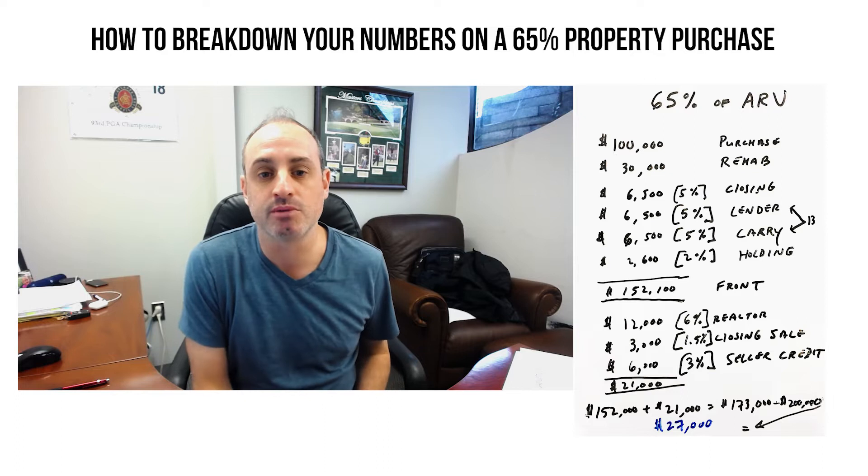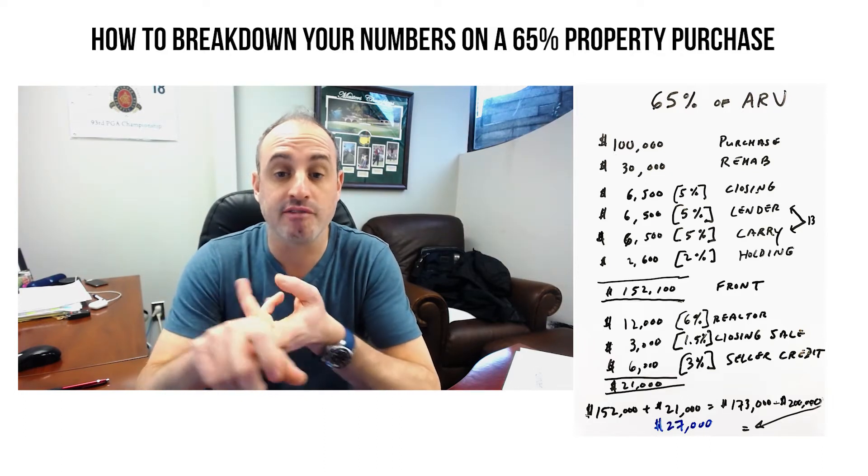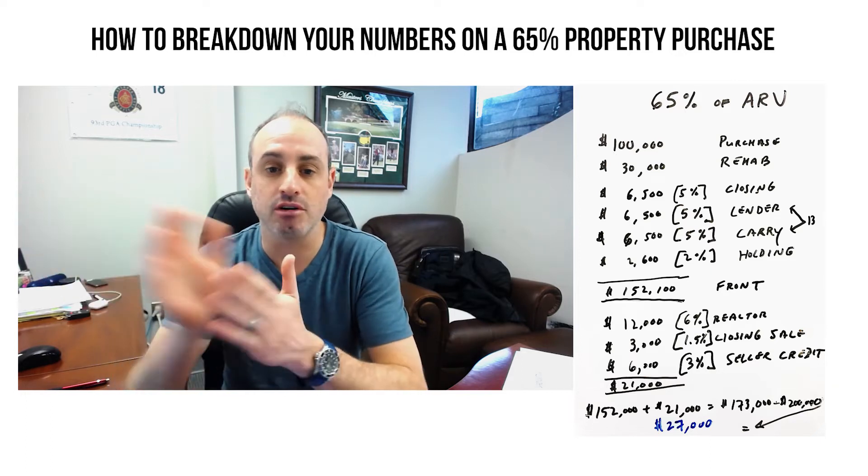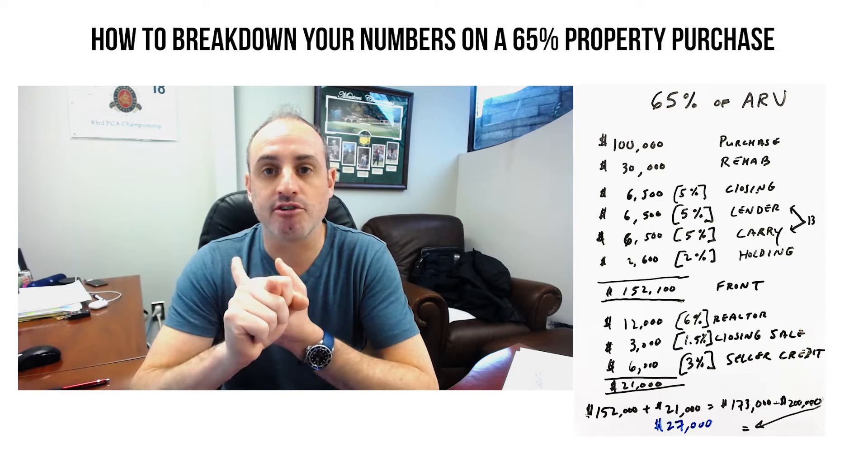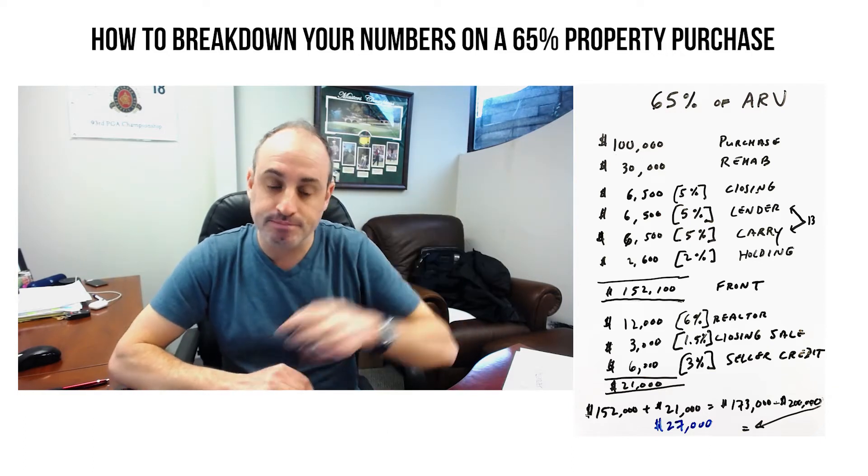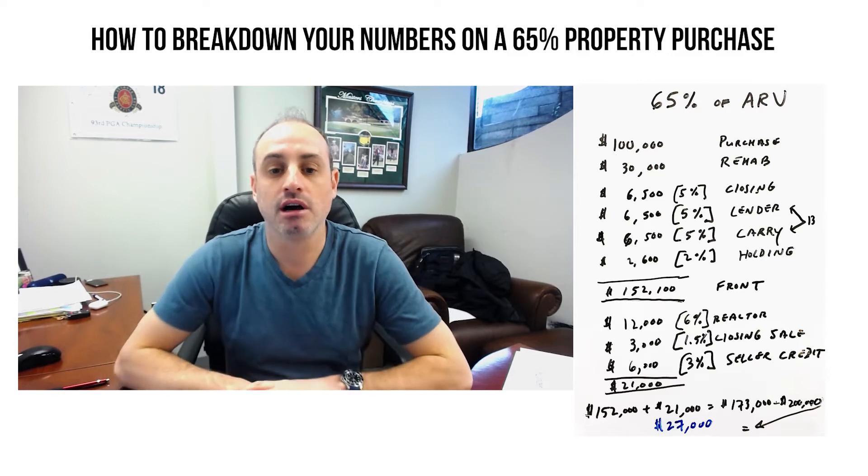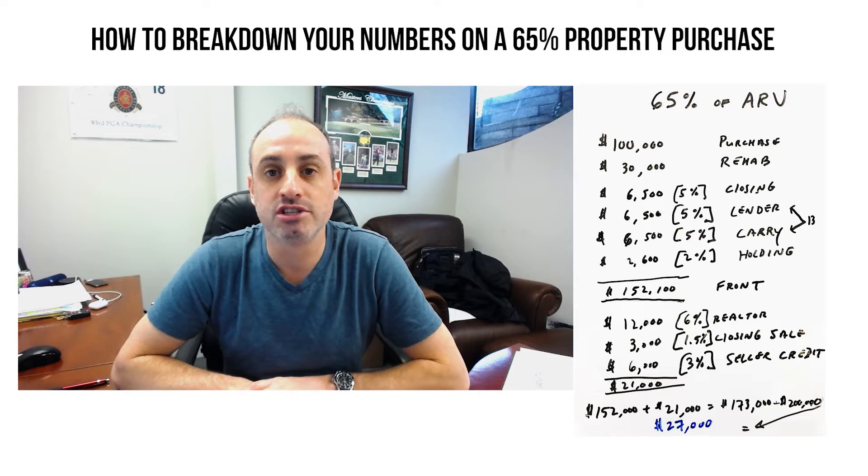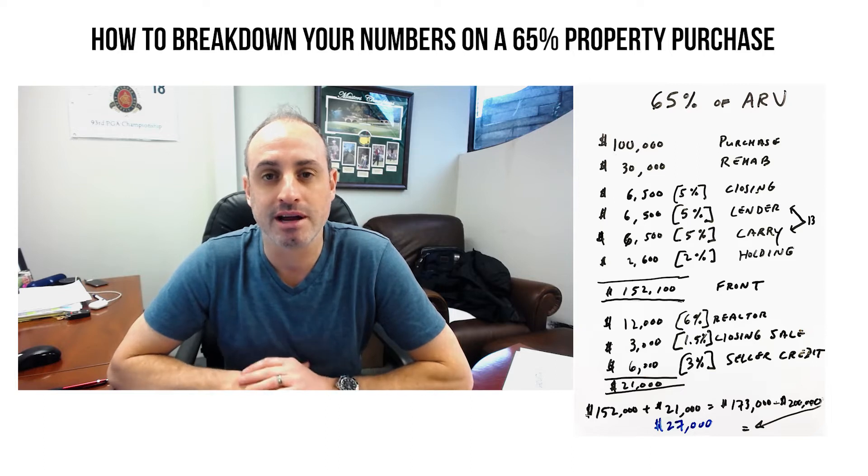So we're going to start with that and work your way to determine exactly what your profit margin is. And you'd be surprised, there's a lot of additional costs associated with a deal that really break into that. So obviously, you don't want to buy any higher than 65%. You have a 35% equity cushion.